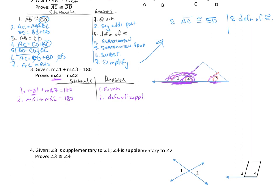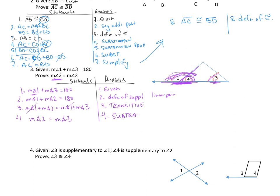You can put linear pair here as well, because we've shown that a linear pair means they're supplementary, which means they equal 180. So then step three: since both expressions equal 180, by transitive property, the measure of angle one plus the measure of angle two equals the measure of angle one plus the measure of angle three. Step four: subtract angle one from both sides, and we get the measure of angle two equals the measure of angle three — subtraction property. And that's exactly what we had to prove.